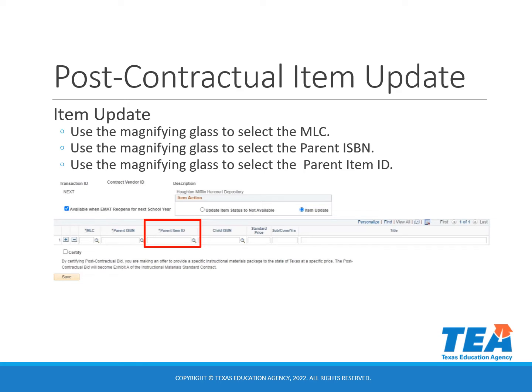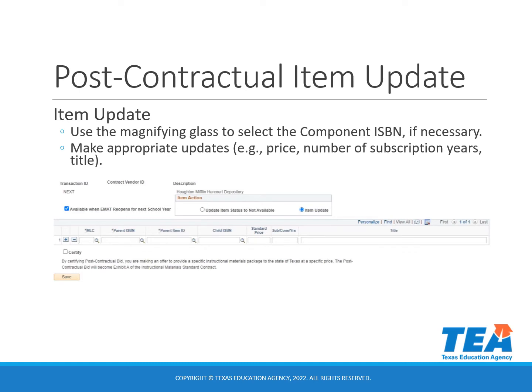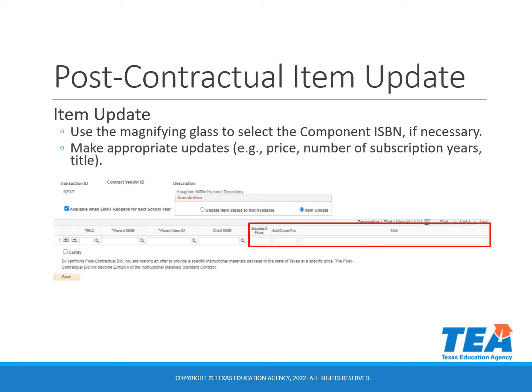Next, you will use the magnifying glass to select the parent item ID. If you need to make an update to a component, you will select the component ISBN by clicking on the child ISBN magnifying glass; otherwise, you will leave it blank. The rest of the information will populate based on the parent and/or child ISBN and parent item ID you selected. Then you will make the appropriate updates to the price, the subscription years, or the title.